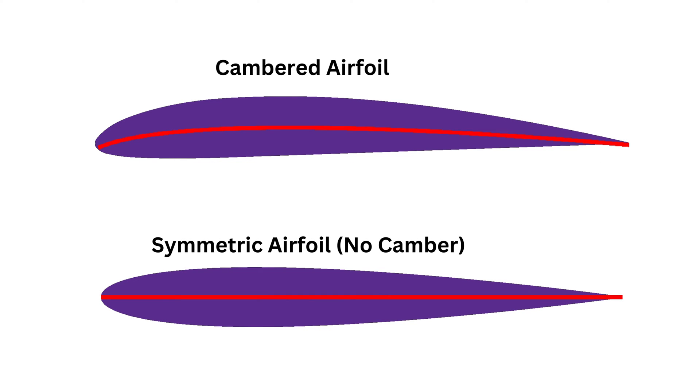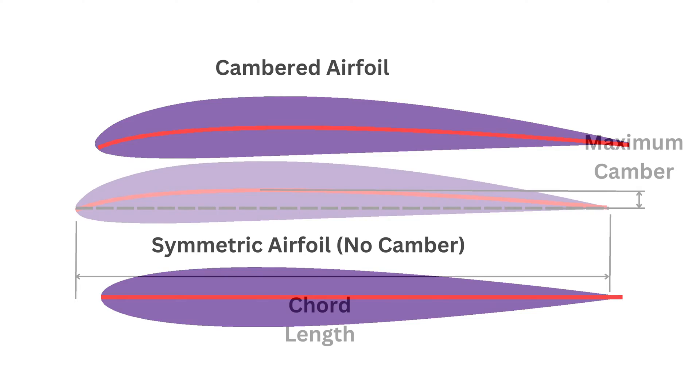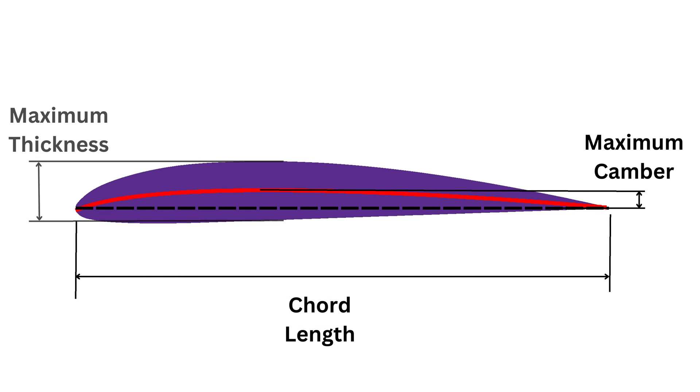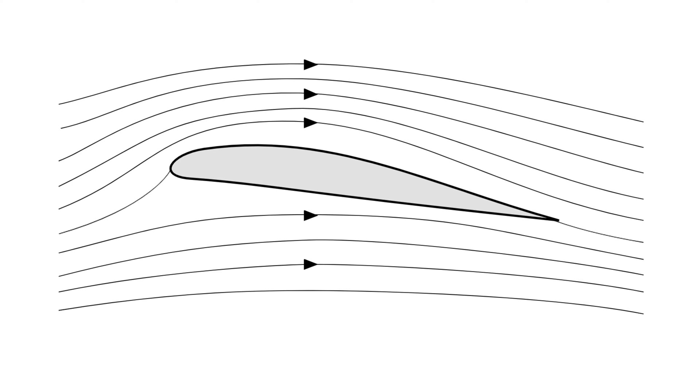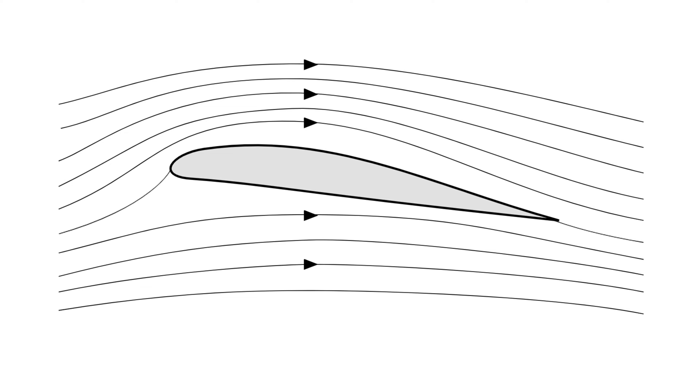Note that some airfoils are symmetric and have zero camber, while others are curved. As we will see, camber is used to increase the lift capabilities of the airfoil. Finally, the maximum thickness is the maximum distance between the upper and lower surfaces.